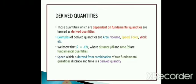Derived quantities are those quantities which are dependent on fundamental quantities. For example, area, volume, speed, force, work, etc. Let us take the example of speed. We have already studied that speed s is equivalent to d by t, that is distance by time. Here distance and time are fundamental quantities, while speed is a derived quantity because speed is got by dividing two fundamental quantities of distance and time.